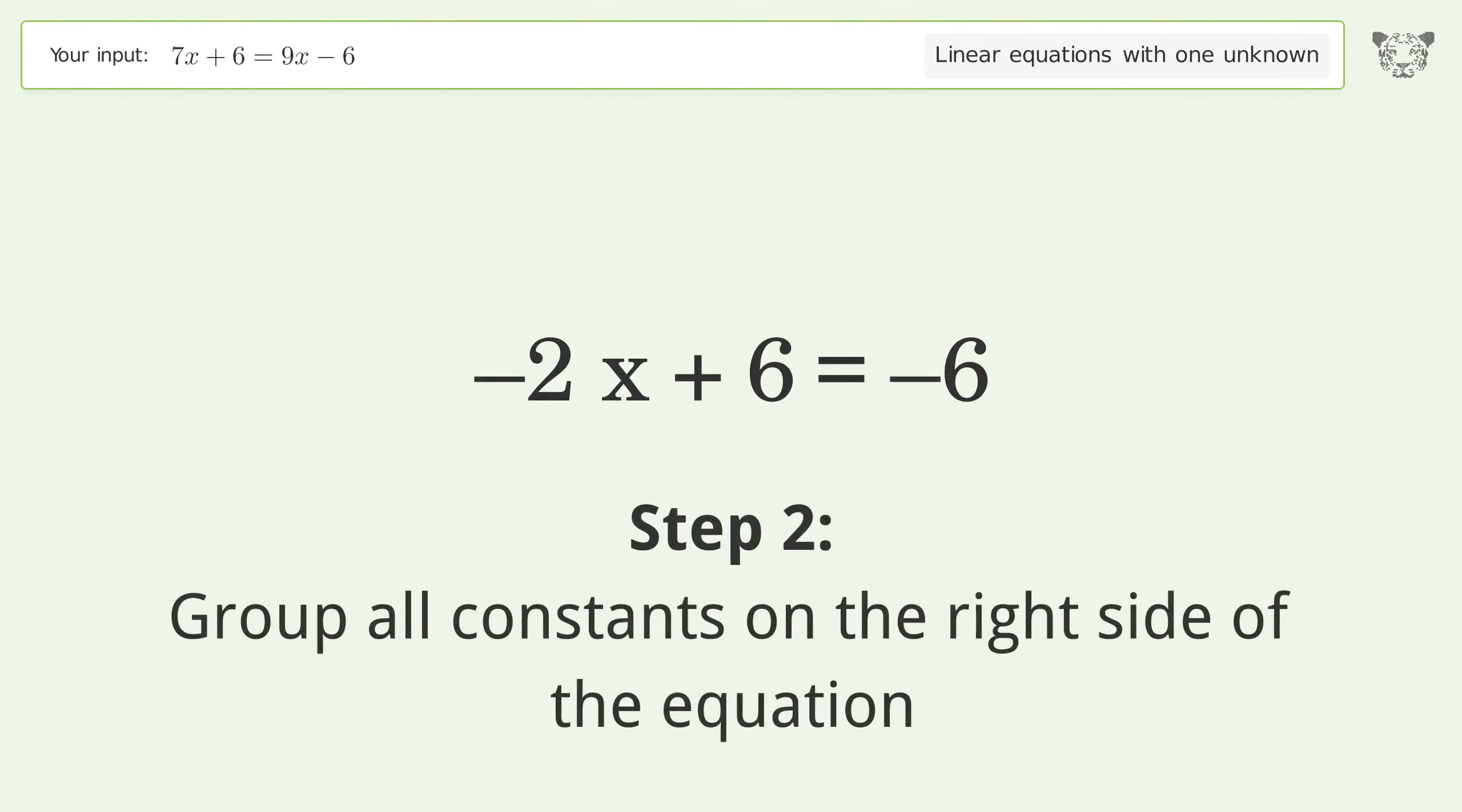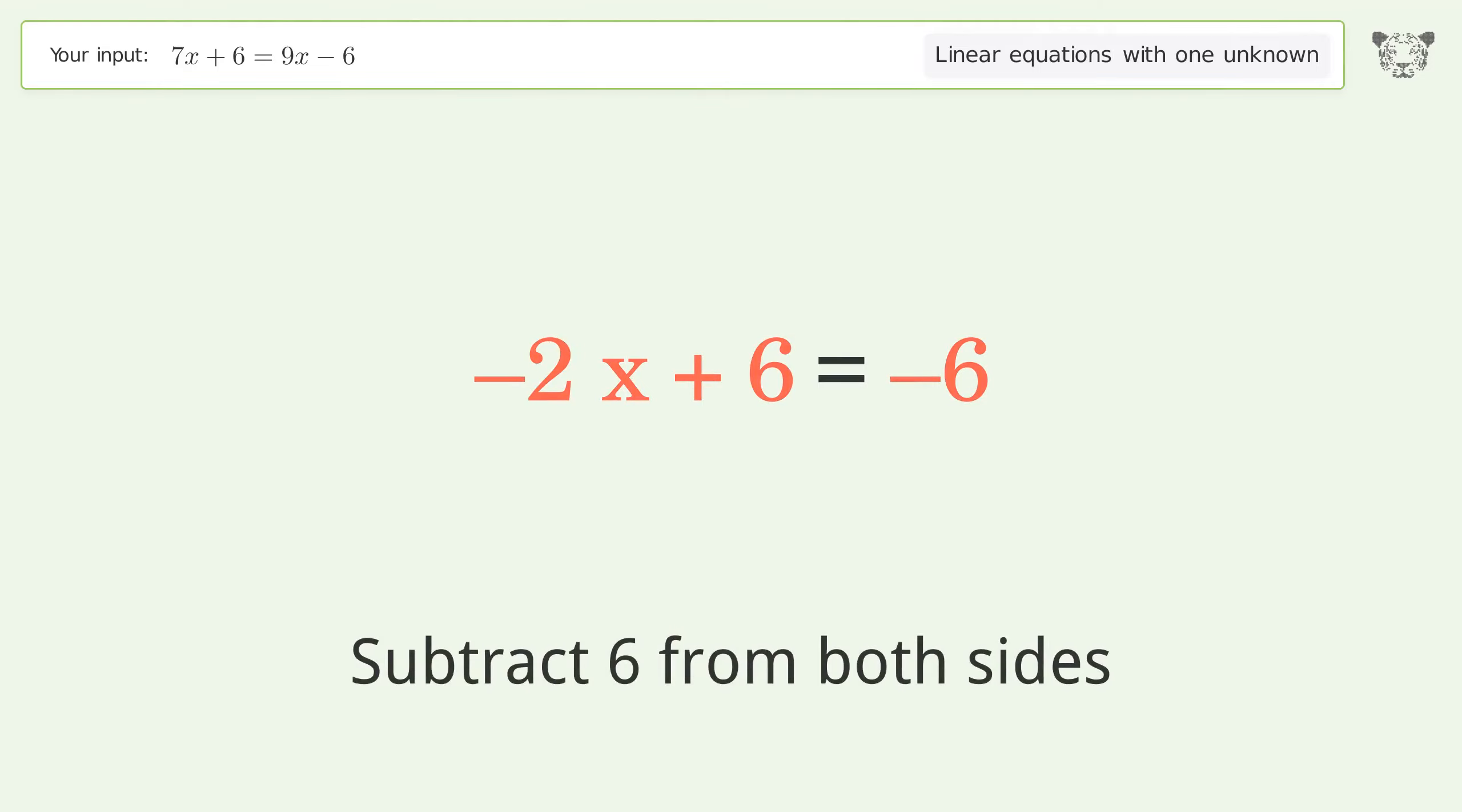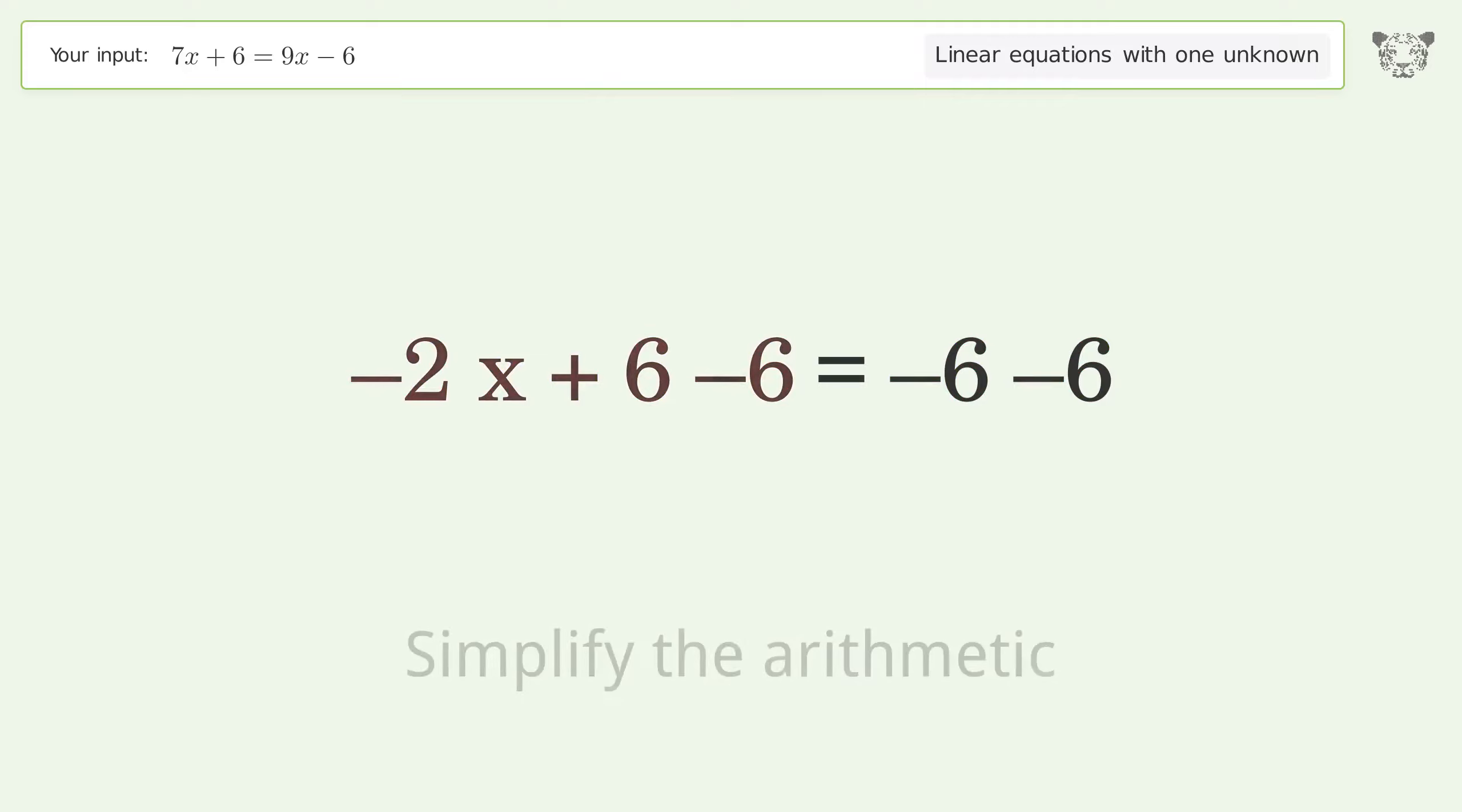Group all constants on the right side of the equation. Subtract 6 from both sides. Simplify the arithmetic.